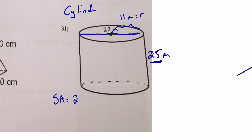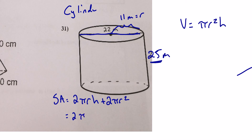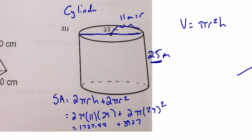Surface area = 2π(11)(25) + 2π(11)². Plugging into the calculator: first part ≈ 1,727.88, second part ≈ 3,927. So surface area ≈ 5,654.88 square meters. Note: use r = 11, not 22.